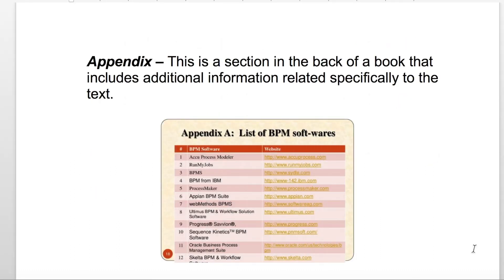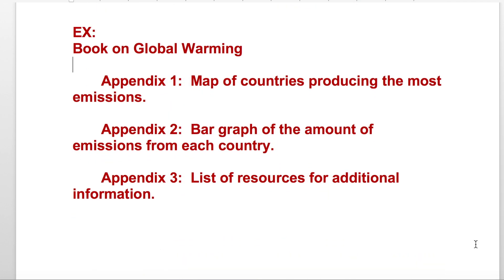The next type of reference material is the appendix. The appendix is the section in the back of a book which includes additional supplemental information related specifically to that text. Not all books will have appendices. For example, if you were reading a book on global warming, appendix one might have a map showing which countries produce the most emissions, appendix two could be a bar graph of emissions per country, and appendix three could be a list of resources for additional information.